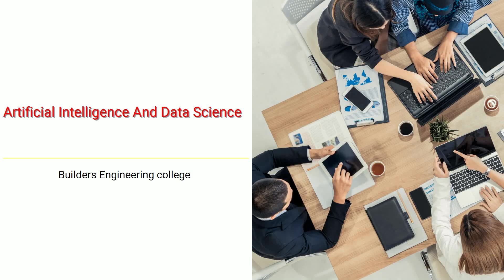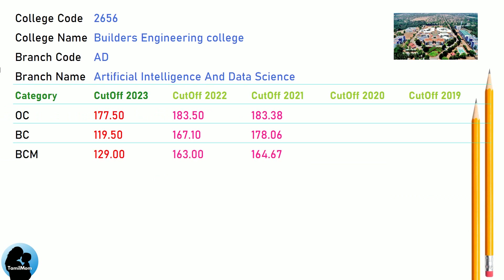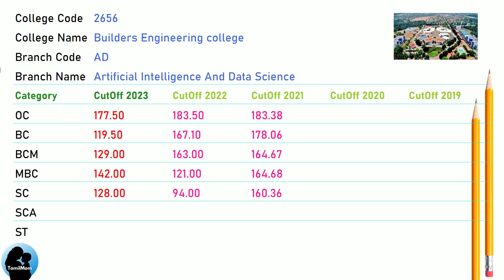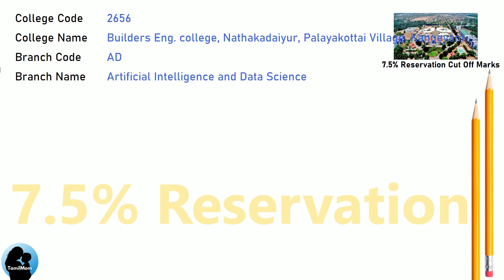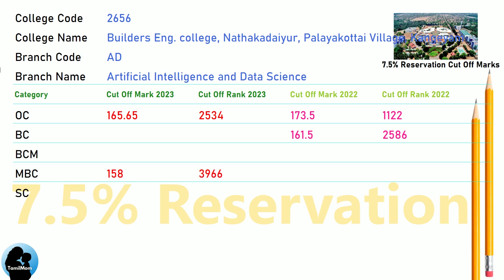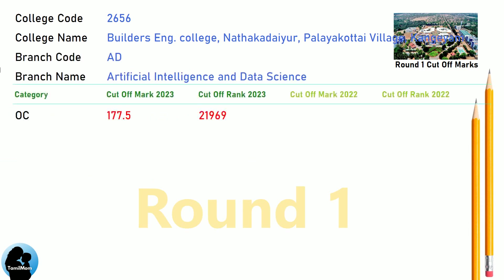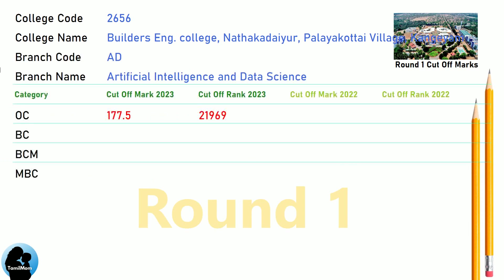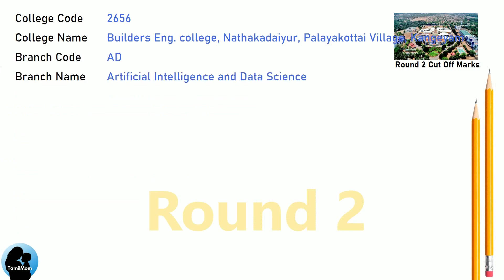DNA Cut-Off for Builders Engineering College in Artificial Intelligence and Data Science. DNA 7.5 Reservation Cut-Off for Builders Engineering College in Artificial Intelligence and Data Science. DNA Round 1 Cut-Off and Round 2 Cut-Off for Builders Engineering College in Artificial Intelligence and Data Science.